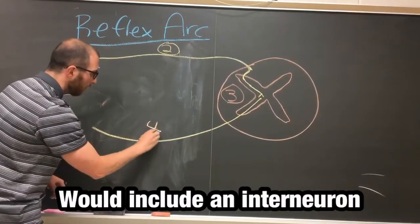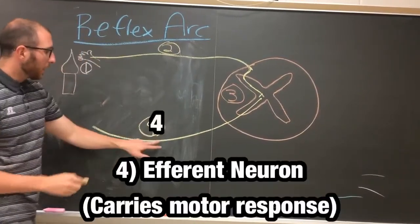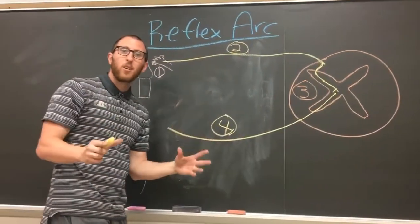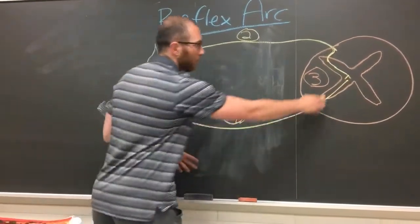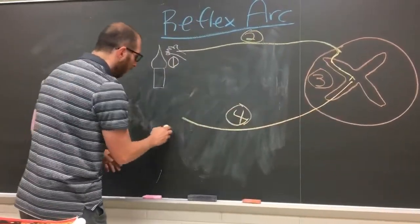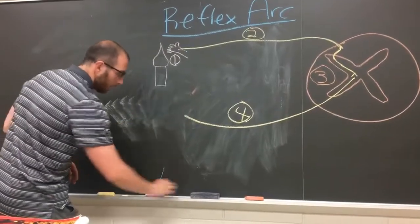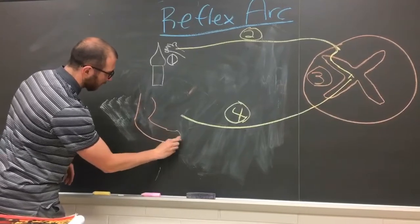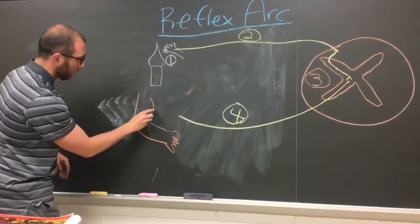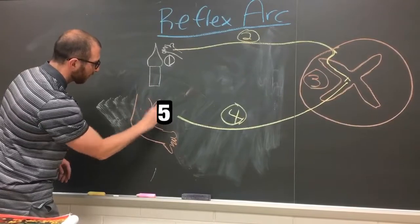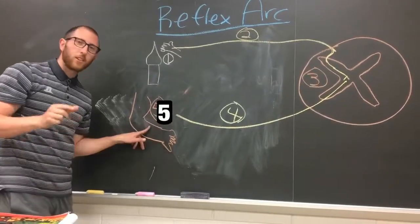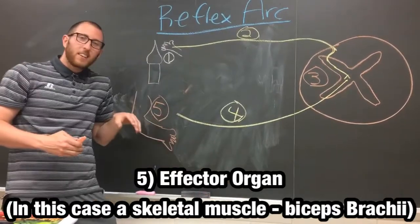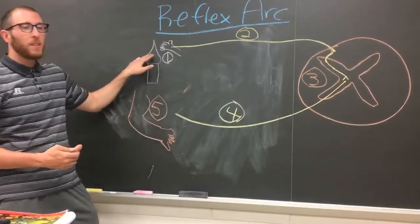Number four is the efferent neuron — the motor neuron. This sends a motor response over to muscles. Number five is the effector organ, such as your biceps, causing you to contract and pull your hand away from that hot candle.